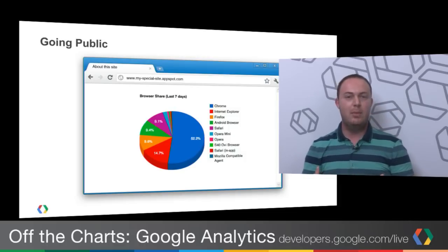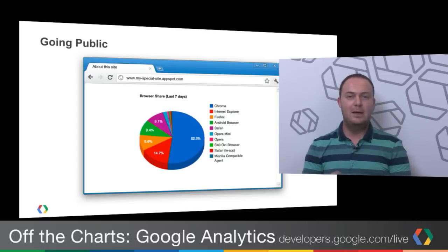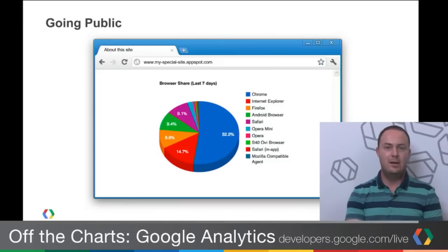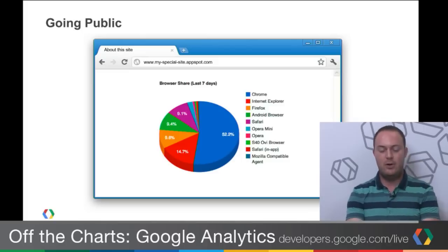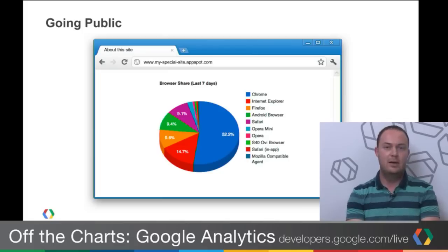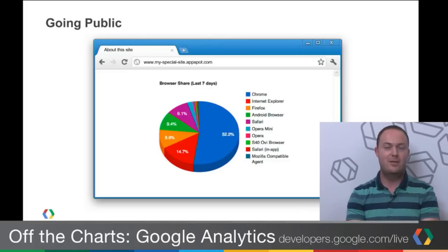When you think about making your data public, one use case we hear is that people want to take some report from Google Analytics and make that data publicly available — maybe on their website, or internally as a dashboard you can share with everybody without worrying about authentication and authorization. With Google Analytics, you need an account and you need to authenticate, which can be complex when you just want to share data with a lot of people. For example, showing browser share for the last seven days, visitor demographics, or creating a page for advertisers.